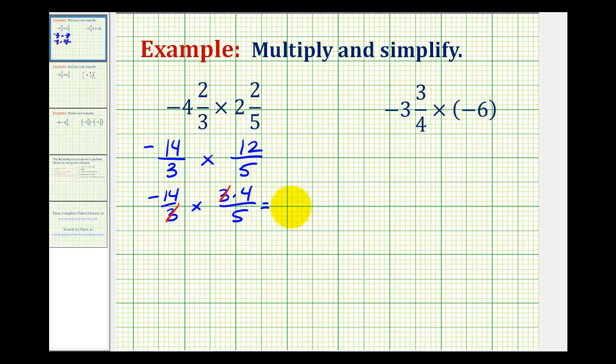Now we can go ahead and multiply. In the numerator, we have negative fourteen times four, that's negative fifty-six. The denominator is one times five, or five.